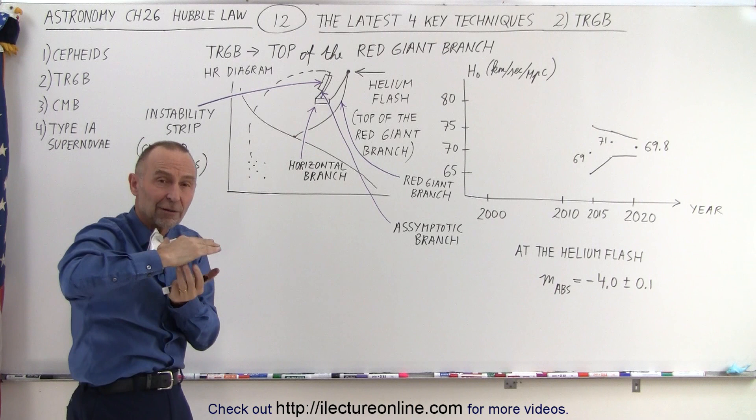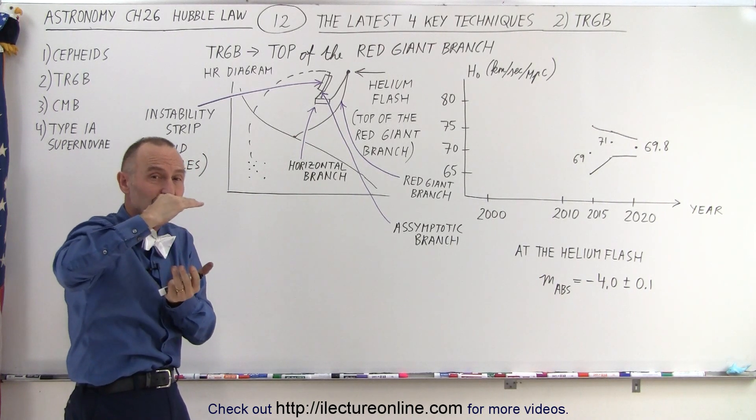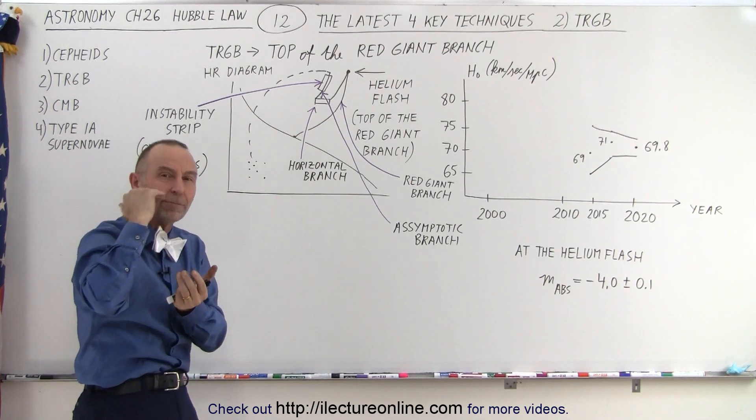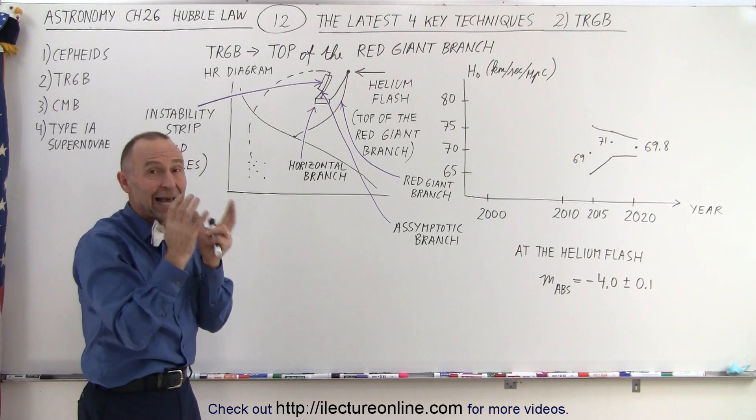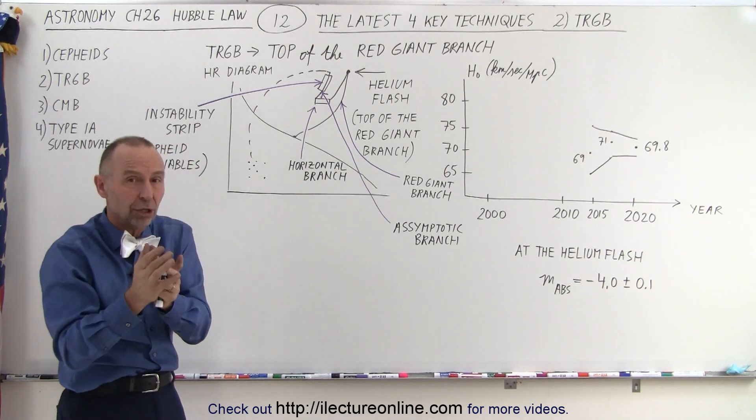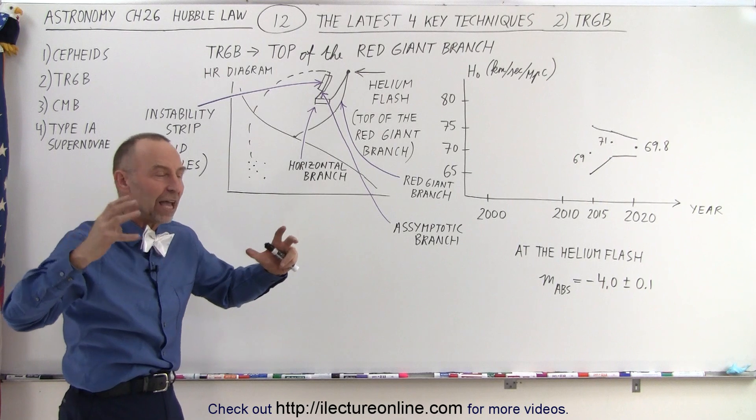As the core is collapsing, the temperature of the core reaches a very high temperature and eventually reaches 100 million Kelvin. At that point, hydrogen can be converted into carbon. And at that moment, we have what we call the helium flash.